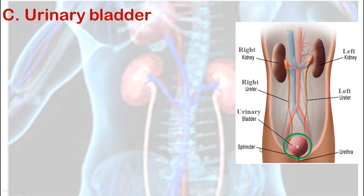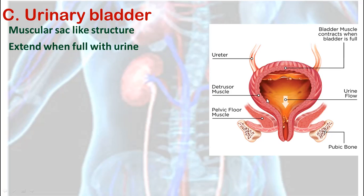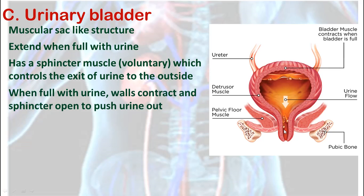The third structure in our urinary system is the urinary bladder. It is a muscle-like sac that can stretch or extend when full of urine. It collapses when empty and stretches when full, and this stretch makes us feel that the urine needs to pass out. At the end of the urinary bladder we have a sphincter, which is a circular muscle that controls the exit of the urine. When the urine fills the urinary bladder, the walls contract and the sphincter opens to push the urine out through the urethra.